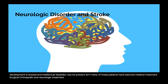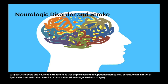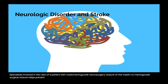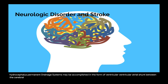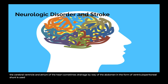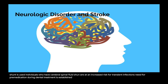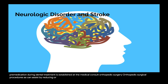Medical treatment involves surgical, orthopedic, and urologic treatment as well as physical and occupational therapy. Neurosurgical closure of the myelomeningocele helps prevent infection that may otherwise enter the spinal cord, though paralysis is not lessened by surgery. Permanent drainage systems for hydrocephalus may be accomplished in the form of a ventriculoatrial shunt between the cerebral ventricle and atrium of the heart, or a ventriculoperitoneal shunt draining by way of the abdomen. Individuals with cerebral spinal fluid shunts are at increased risk for transient infections, and need for premedication during dental treatment is established at the medical consult. Orthopedic surgery can assist by reducing or correcting deformities.